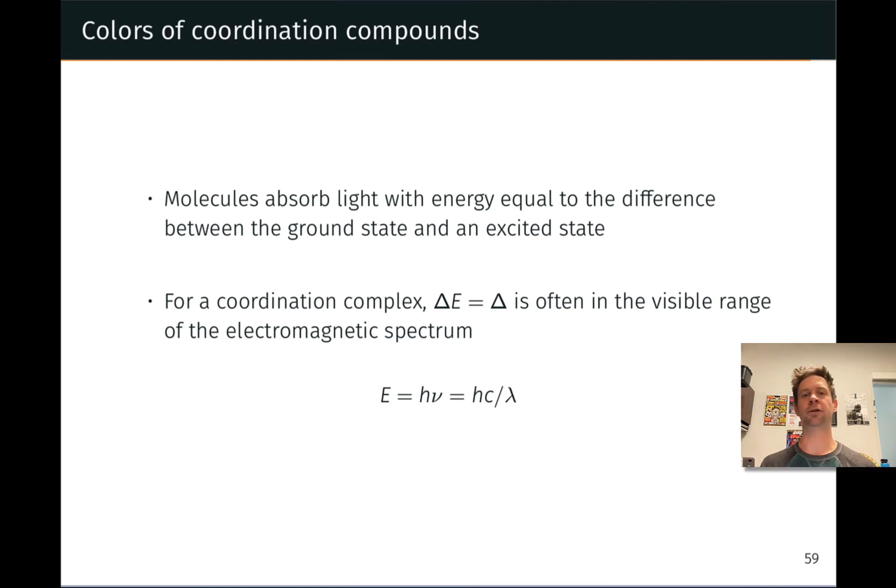Let's start with some general background about the interaction of light with matter. Regardless of whether that matter is a coordination complex or not, for any molecule, that molecule is going to absorb light with an energy equal to the difference between the ground state and an excited state. The excited state is typically generated by imagining the ground state electron configuration and taking one of those electrons and promoting it to a higher energy empty orbital, which produces an excited state.